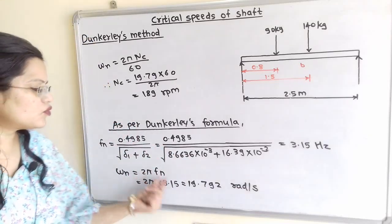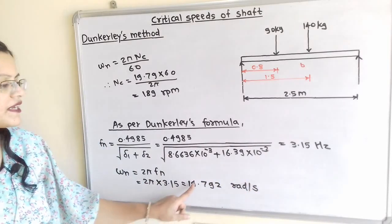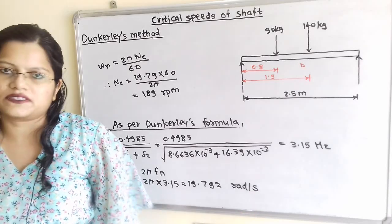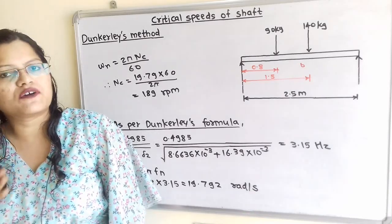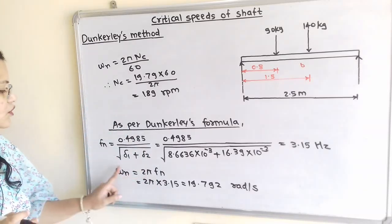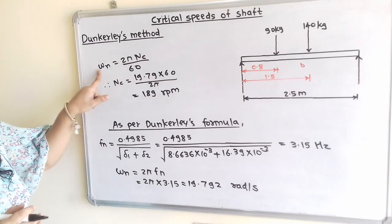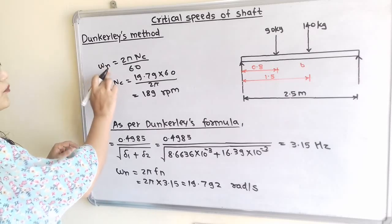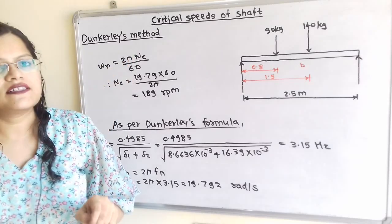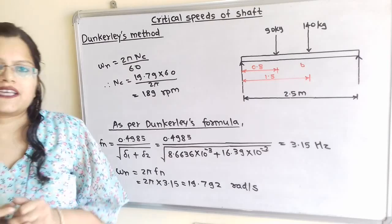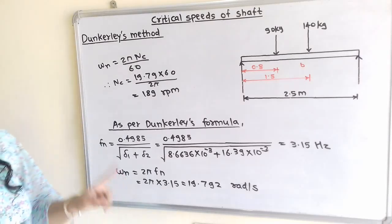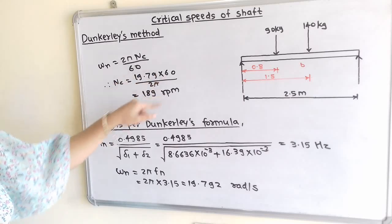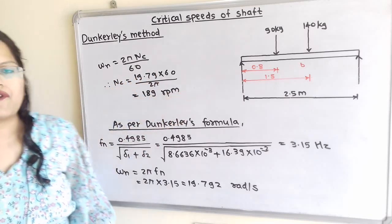Now omega n is equal to 2 pi fn. So fn value if we put we will get the natural frequency 19.792 radian per second. But now we have to find out the speed of the shaft Nc in RPM. So what is the relation in between this omega n and Nc? We have formula omega n is equal to 2 pi Nc by 60. So here we can also say omega c because that is the critical speed or critical frequency is also known as the natural frequency. So omega n is nothing but omega c. So here omega n is equal to 2 pi Nc by 60. When we put the value we will get Nc is equal to 189 RPM.